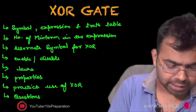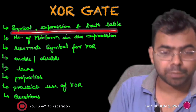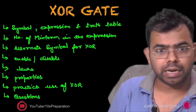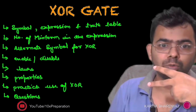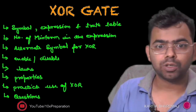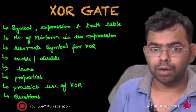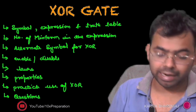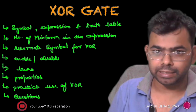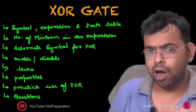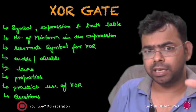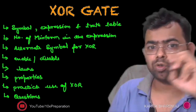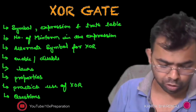First of all, I am going to discuss about the simple expression and the truth table. Whenever two inputs are there — suppose X and Y — two inputs are going to be considered. What will be the expression, symbol, and the truth table, we will discuss that. After that, we will see how many minterms are there if n variables are there in the XOR gate.